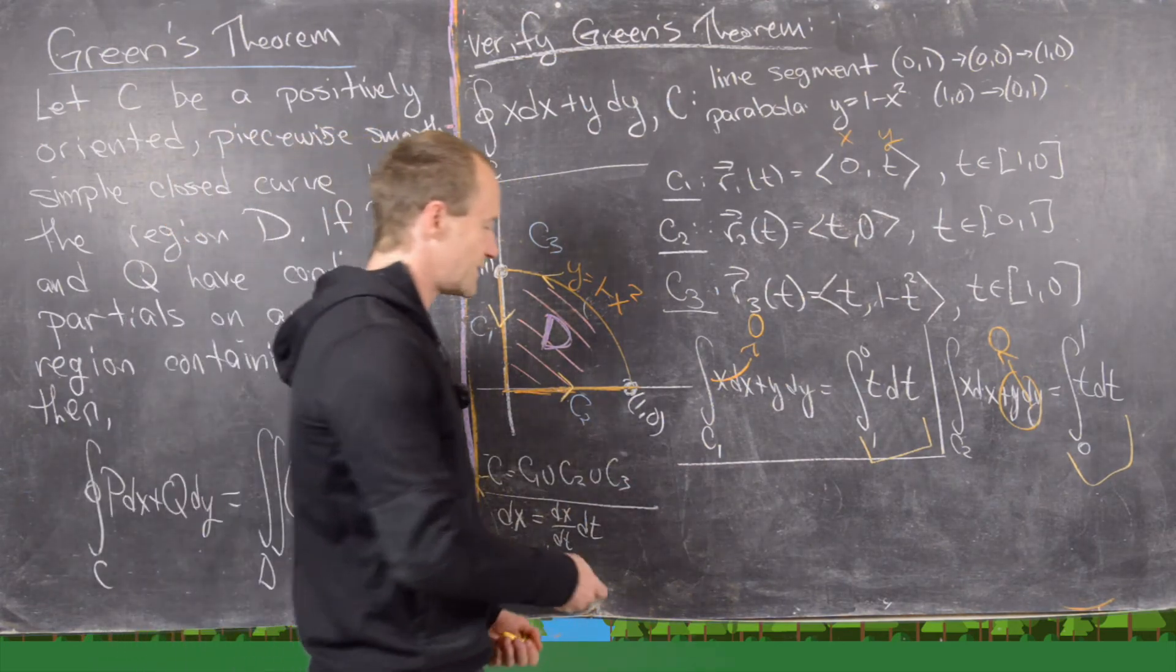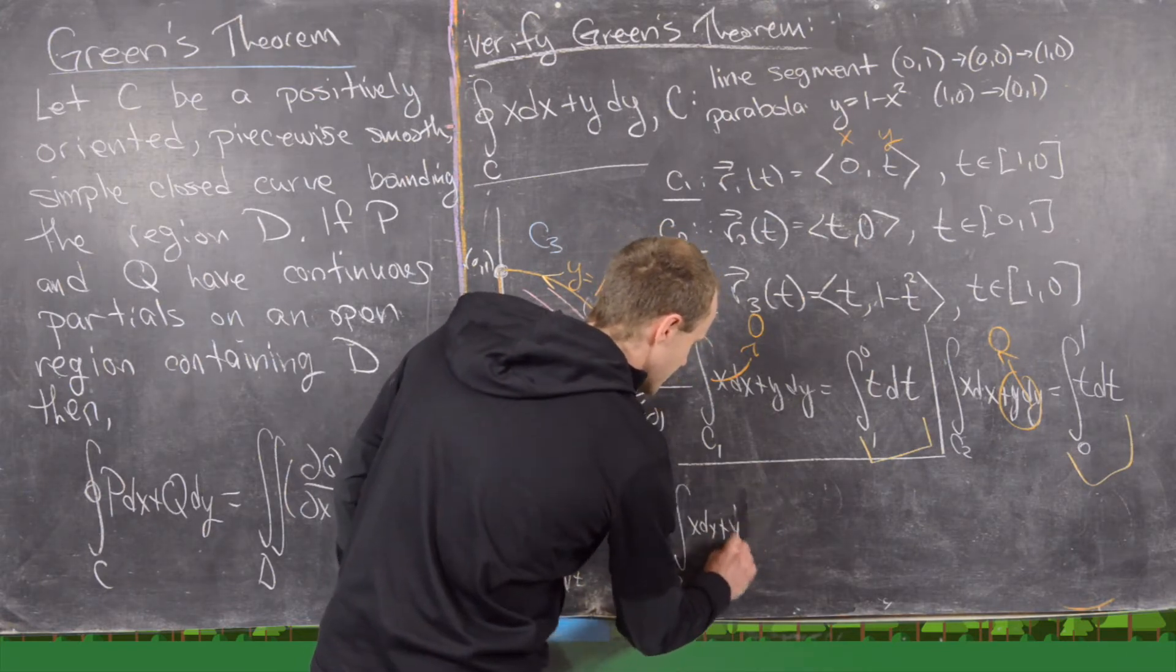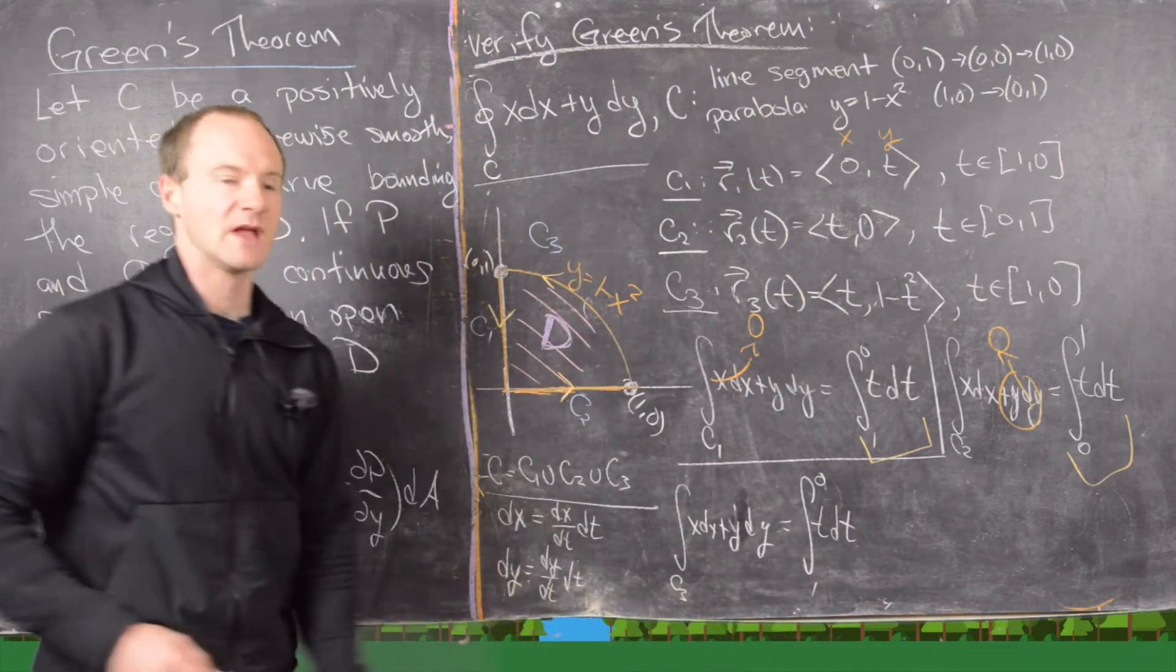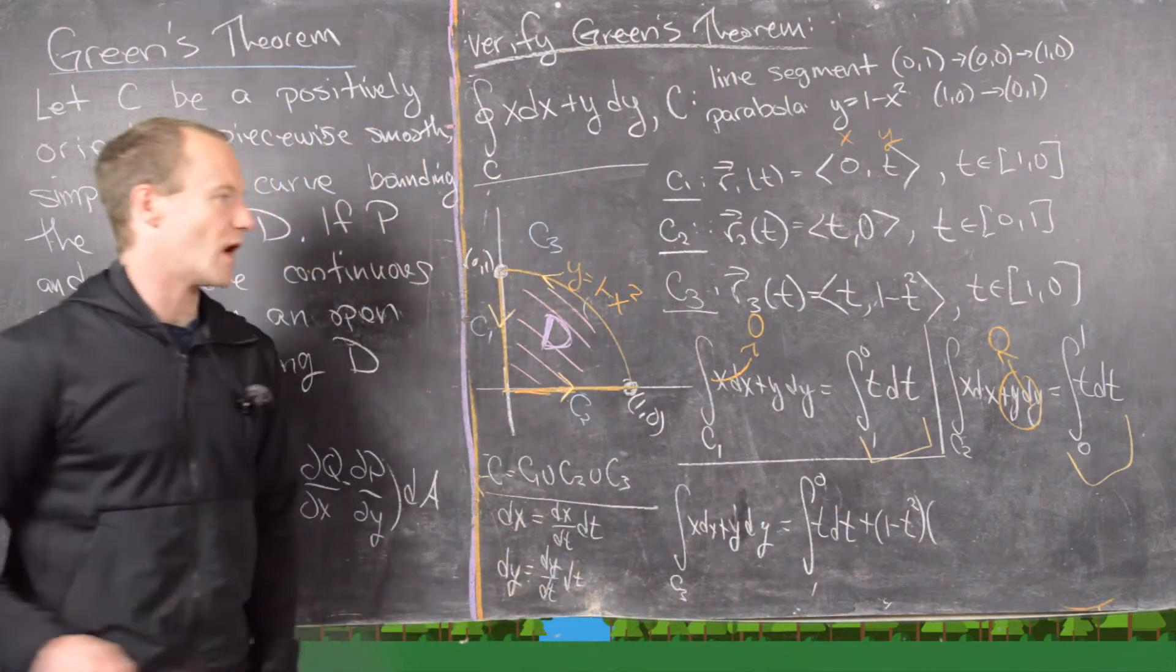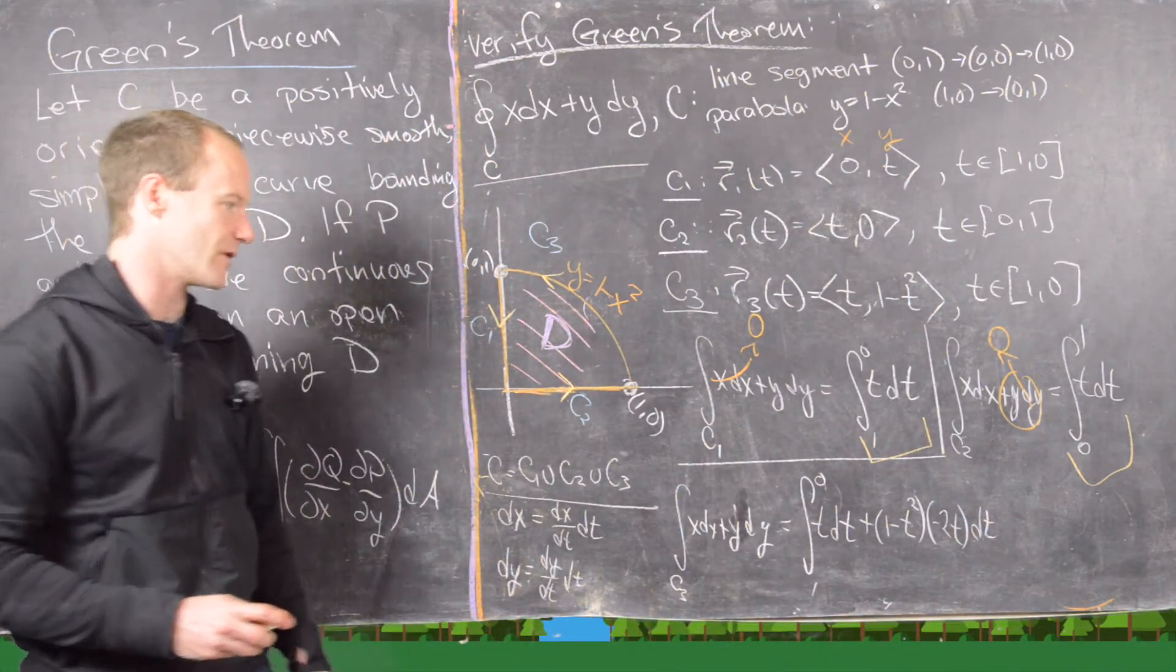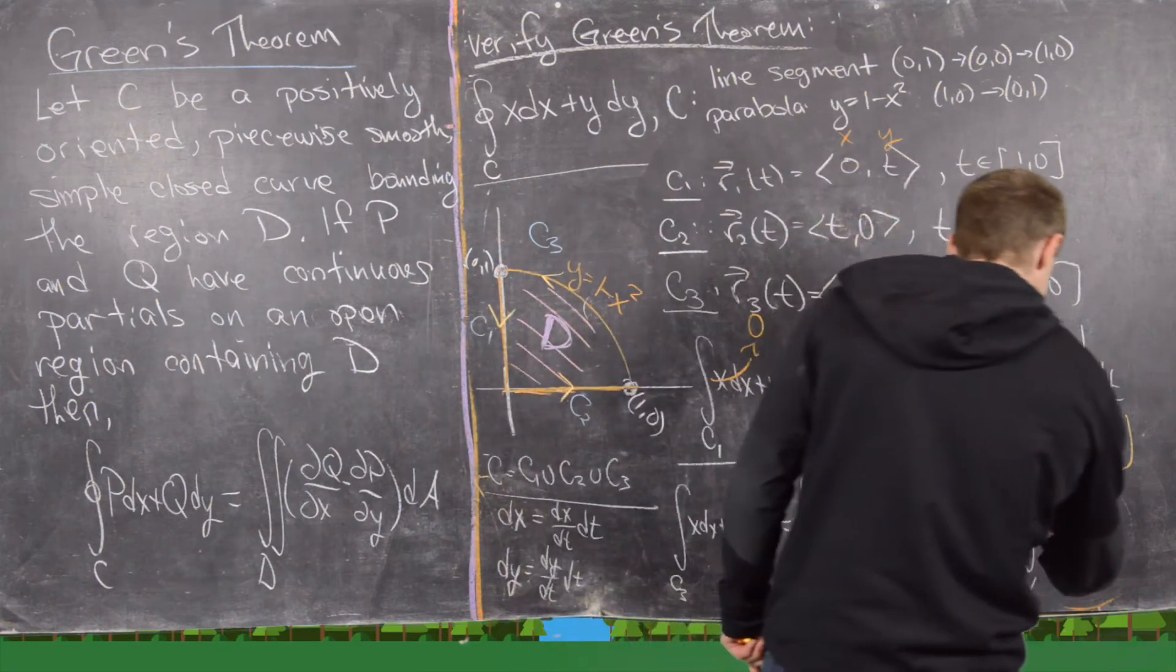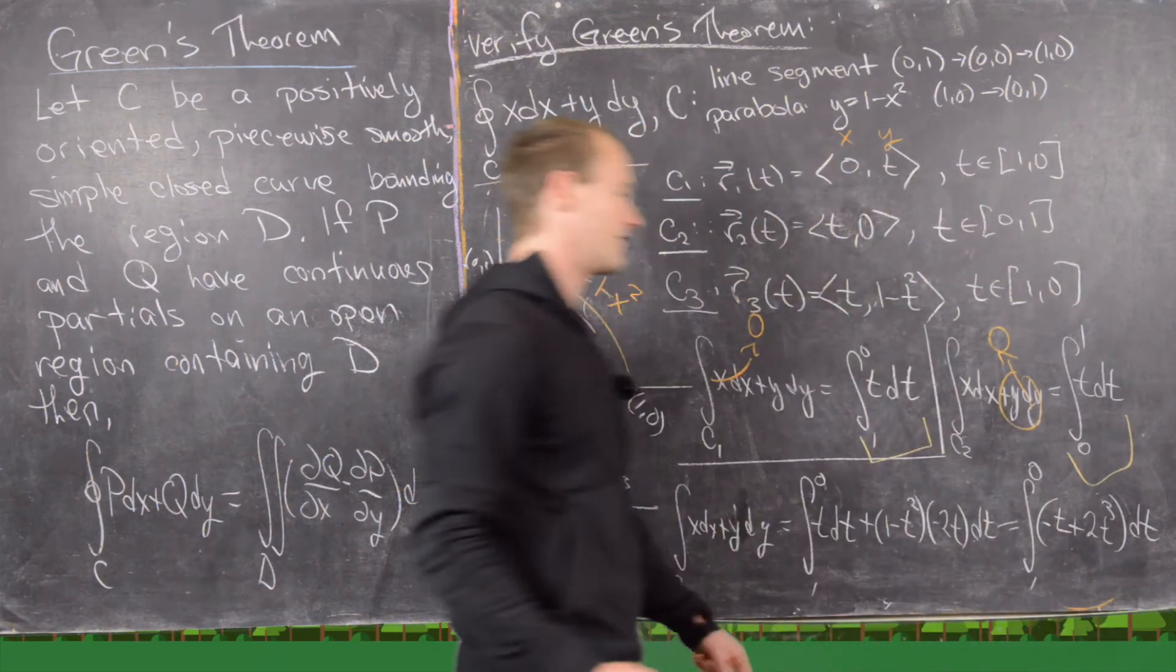So now let's go ahead and calculate the integral over C3 of x dx plus y dy. And so that's going to be the integral from 1 to 0 of, so let's see what x dx is. So that's going to be t dt from this right here. And let's see what y dy is. So that's going to be 1 minus t squared times, so dy/dt, so that's going to be minus 2t dt. Okay, so we've got something like that going on. But notice that can simplify quite a bit. So that can be the integral from 0 to 1. And then notice we are going to have the following. We'll have minus t plus 2t cubed, and that is dt. So we have that integral.